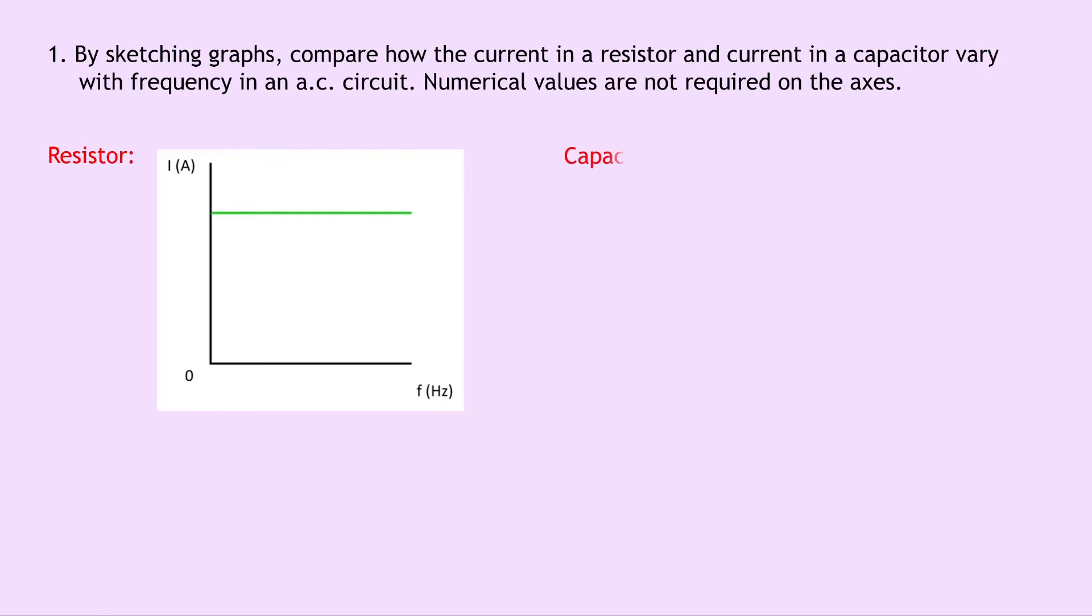However for a capacitor your sketch should look something like this, with current against frequency and a straight line going through the origin. And this shows us that the current in a capacitor is directly proportional to frequency in an AC circuit. So we can conclude for the resistor that I is a constant and for a capacitor I is directly proportional to F.